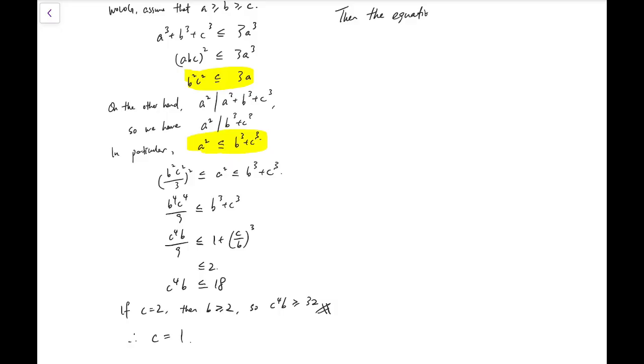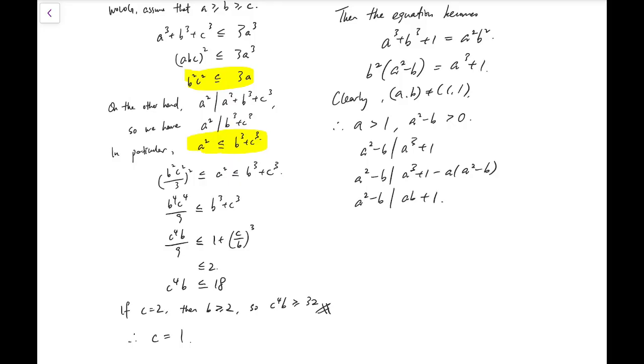Now back to the equation. It becomes a cubed plus b cubed plus 1 equals a squared b squared. And now we write that into b squared times a squared minus b equals a cubed plus 1. And clearly, they cannot be both 1. And so a is at least 1. Not at least 1, but greater than 1. Because a cannot be 1. So then a squared minus b is positive. And we know this. Of course, I can try to simplify that a bit. So now I've reduced the power to 2 for both sides.